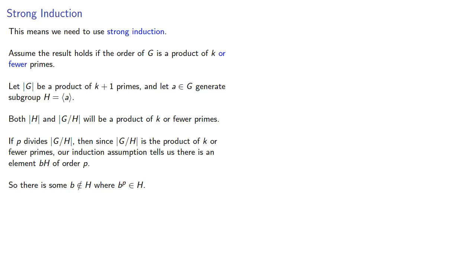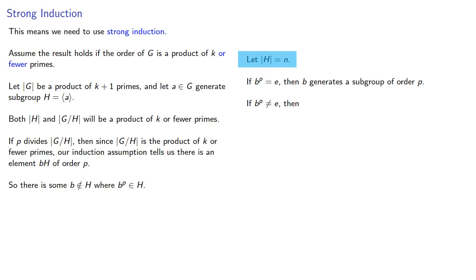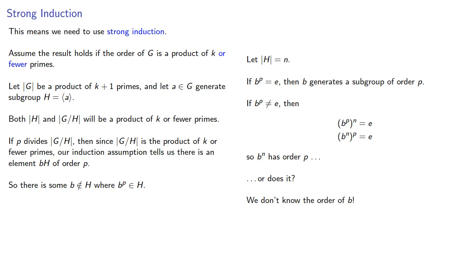Now it's tempting to proceed as follows. Let the order of h be n. If b to the p is the identity, then b generates our subgroup of order p. If b to the p is not the identity, then since the order of h is n, we know that b to the p to the n must be the identity, and so we can swap our exponents, so b to the n has order p. Or does it? The problem is we don't know the order of b. And in particular, if b to the n is the identity, then we haven't found an element of order p.